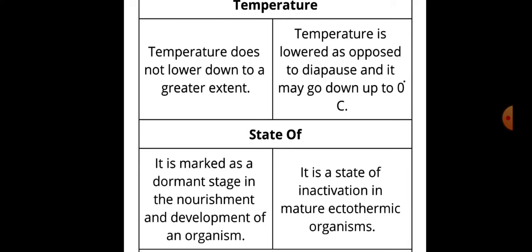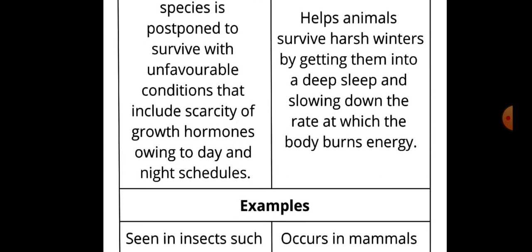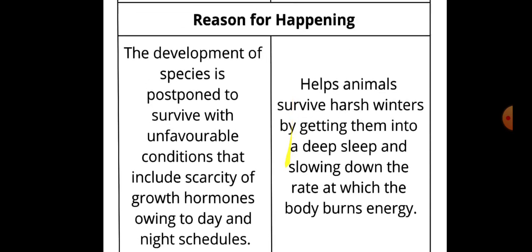State: Diapause is marked as a dormant stage in the nourishment and development of an organism, while hibernation is a state of inactivation in mature ectothermic organisms. Reasons: In diapause, the development of species is postponed to survive unfavorable conditions including scarcity of growth hormones owing to day and night schedules. In hibernation, animals are helped to survive harsh winters by entering a deep sleep and slowing down the rate at which the body burns energy.